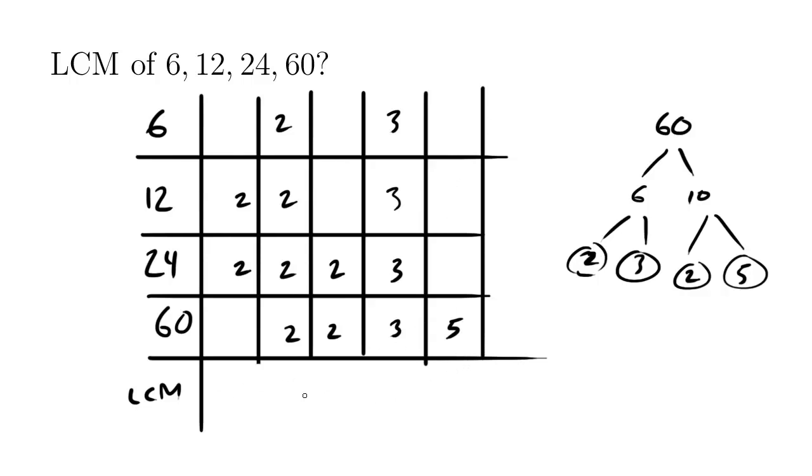So the LCM, if you drop all the numbers down, the 2s drop down. So let me just drop it down this way. This 2 also drops down. And then this 2 drops down. And these are all 3s. The 3 drops down. And so does the 5.